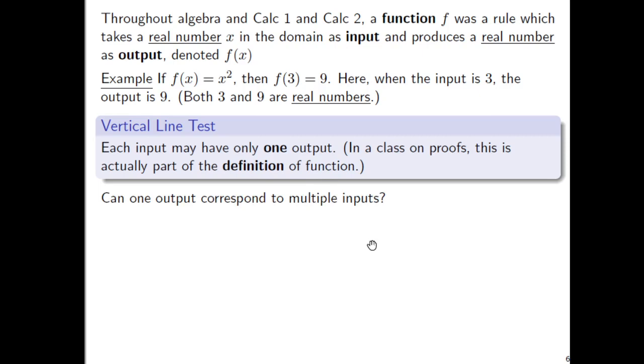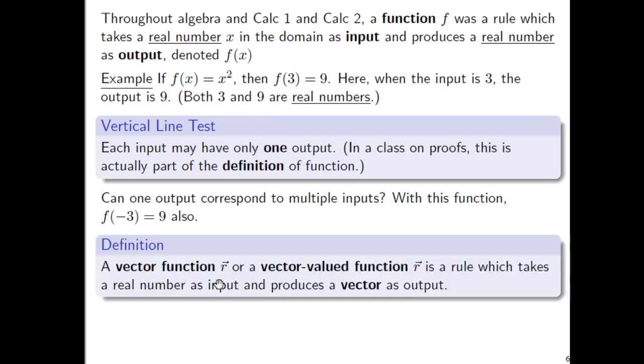Now, can one output correspond to multiple inputs? Sure, that's possible. Even with the function above, f of negative 3 is equal to 9 also. So both 3 and negative 3, both of those inputs lead to 9 being the output. But the point is, you only get one output. So 3 leads to only one output, namely 9. Negative 3 leads to only one output, namely 9.